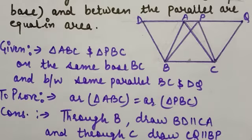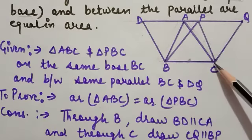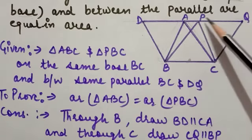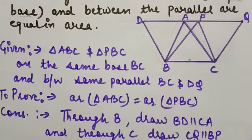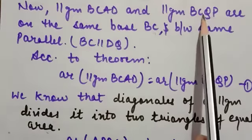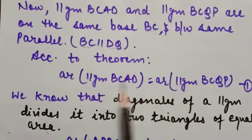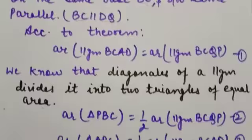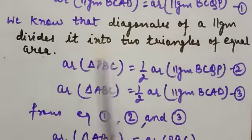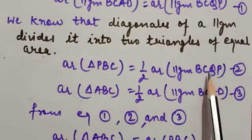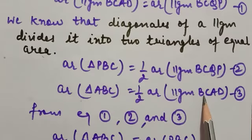The diagonal of a parallelogram divides it into two triangles of equal area. In parallelogram BCAD, AB is a diagonal; in parallelogram BCQP, PC is a diagonal. Now, parallelograms BCAD and BCQP are on the same base BC and between the same parallels BC and DA. By Theorem 9.1, their areas are equal. The diagonal divides each parallelogram into two triangles of equal area, so area of PBC = ½ × area of BCQP and area of ABC = ½ × area of BCAD.